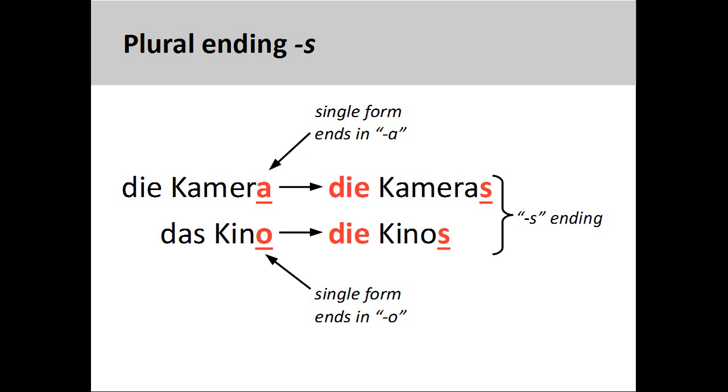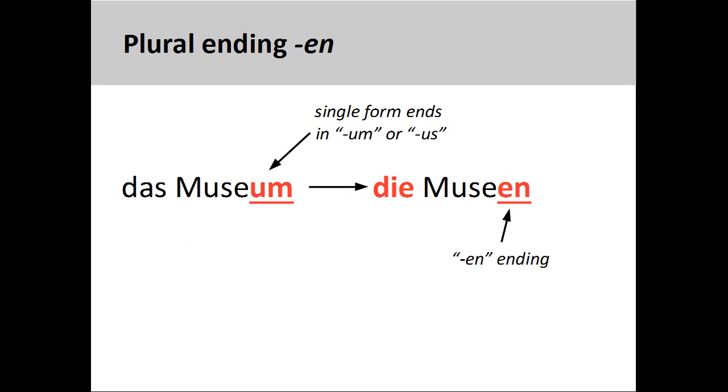The noun Kino, movie theater, is another: Kinos. Finally, it is important to note that words of Latin origin ending in -us or -um, such as Museum, add -en in the plural: Museen.